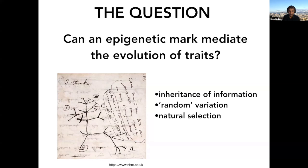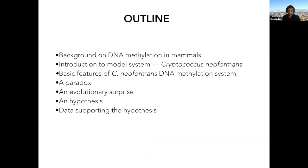The outline of the talk: first, some quick background on DNA methylation in mammalian cells. Then an introduction to our model system, a yeast called Cryptococcus neoformans. Then the basic features of the DNA methylation system — a bit of background, important for the rest of the talk — followed by a paradox, an evolutionary surprise, a hypothesis, and data supporting it.